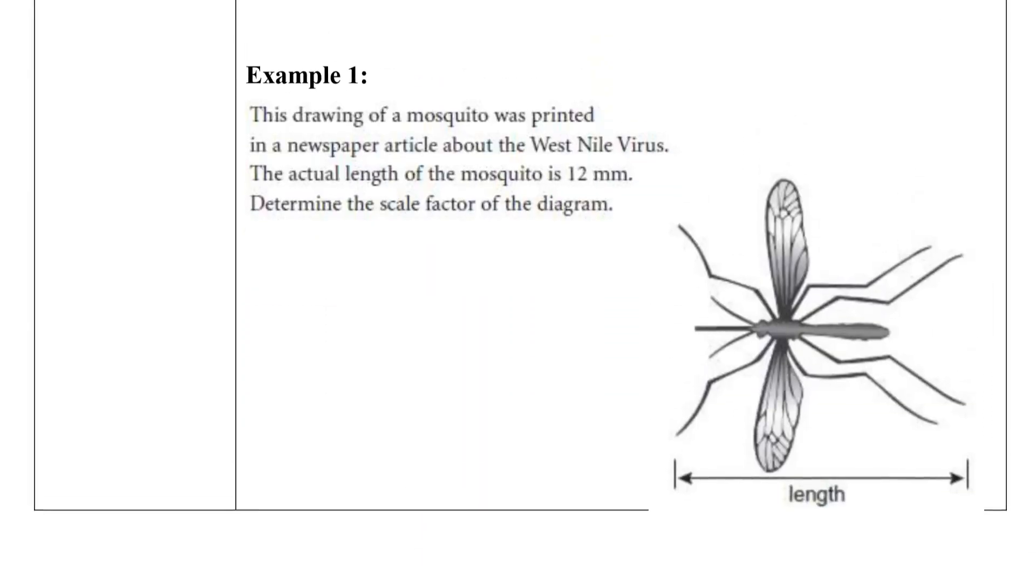So let's look at this one. Example number 1. This drawing of a mosquito was printed in a newspaper article about the West Nile virus. The actual length of a mosquito is 12 millimeters. Determine the scale factor of the diagram. Well, first things first, like a good little math student, I'm going to say scale factor equals scale length divided by original length.